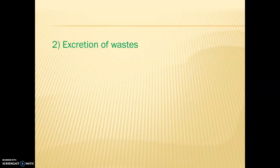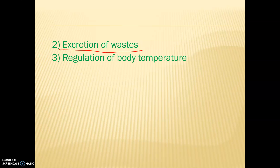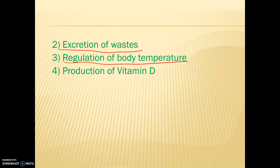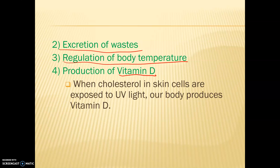Our next function is excretion of wastes. Our skin is also really good for regulation of body temperature. Another function is the production of vitamin D. This is really important because it is one of the only vitamins that we produce ourselves. When cholesterol in the skin cells is exposed to UV light or UV radiation, our body is going to produce vitamin D.